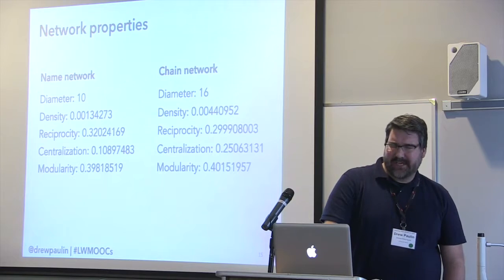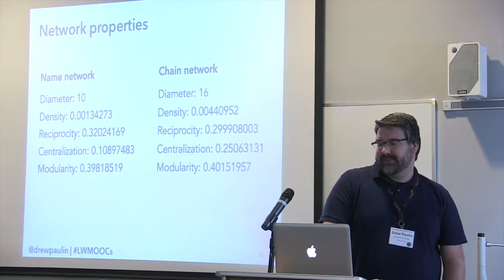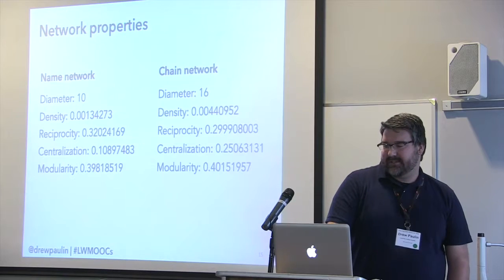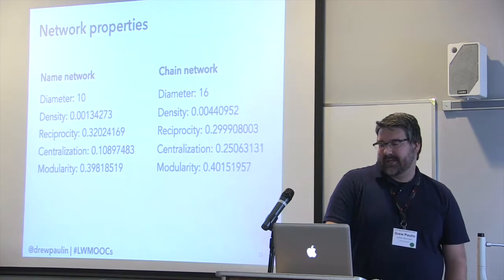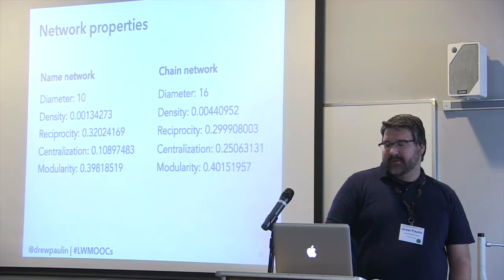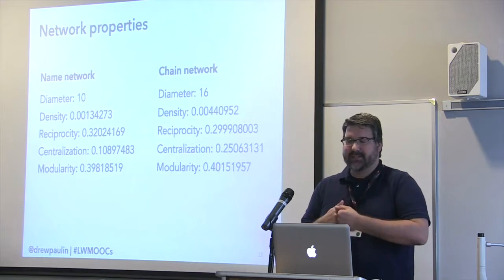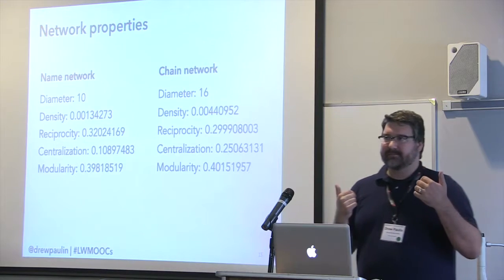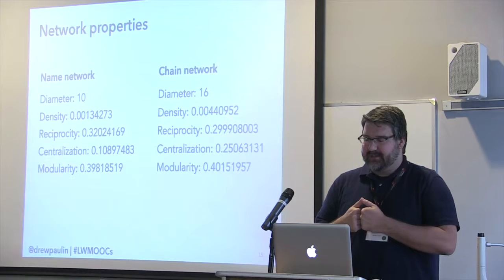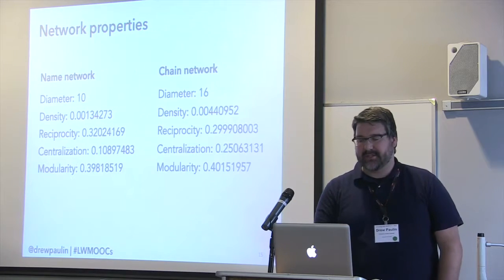Centralization actually does surprise me because you'd think it'd be really high given the disparity between centrality measures of the TA and instructor — but they aren't that high for a network this size. It's those absent nodes throwing things off. If we remove the majority of nodes that posted only once, the name network centralization goes up to 37% and chain goes to 42%, which is actually pretty high compared to other networks of this size.